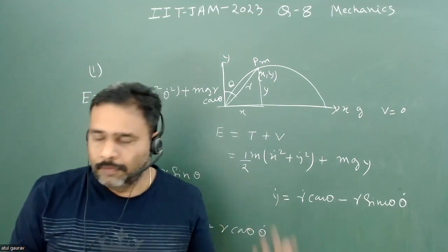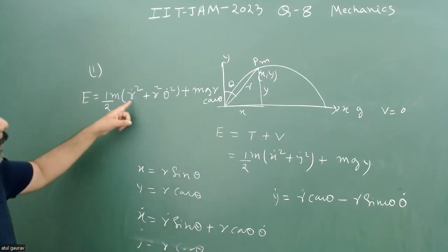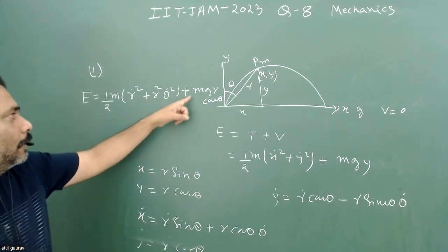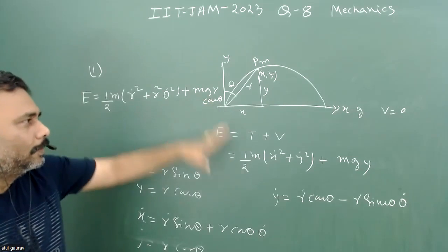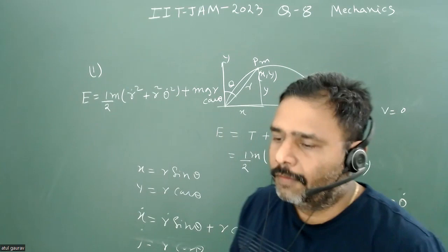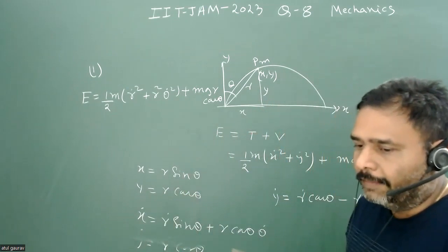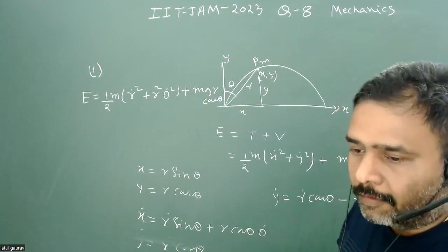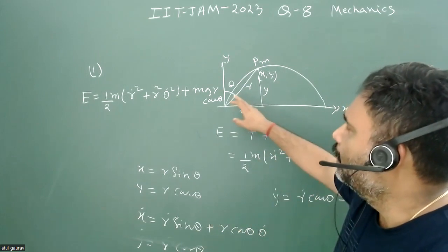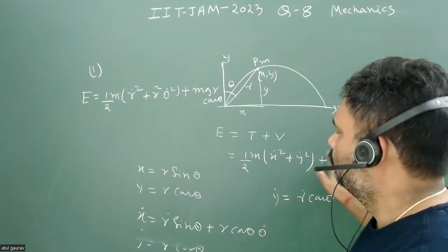So for this particular problem, option one is correct. Total energy is half M R dot square plus R square theta dot square plus MGR cos theta. This is very simple problem if you go from the basics. But we have to always take care of what will be angle theta and how you will write the gravitational term. Thank you.